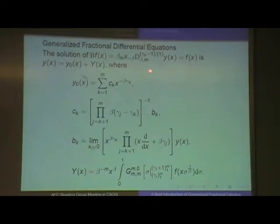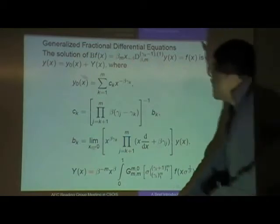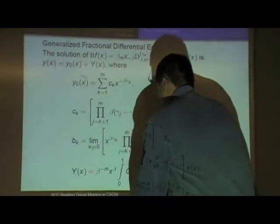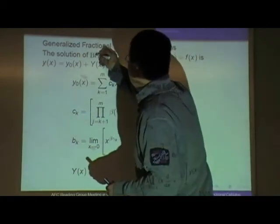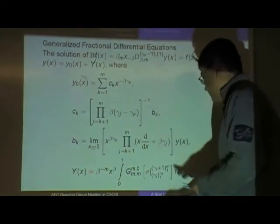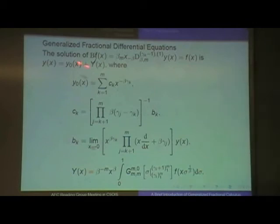So I should write yx here. It should be yx here. So b y equals to fx. b y x equals to fx. How to solve this equation, this generalized fractional order equation? The answer is here.